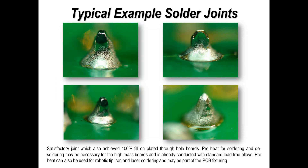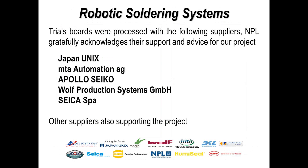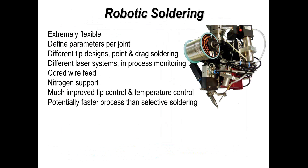Here are four examples of typical joints. When you look at the reports we produced at NPL, you'll see the visual appearance of all the different types of joints, alloys, etc. that we produced on these projects. I'd just like to thank the companies that provided me equipment for this exercise. You can see listed here the suppliers of robotic soldering systems — some provide only robotic point soldering, some provide contact soldering and laser soldering. My thanks to those who supported the project.